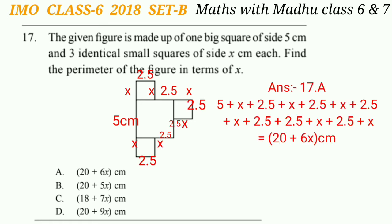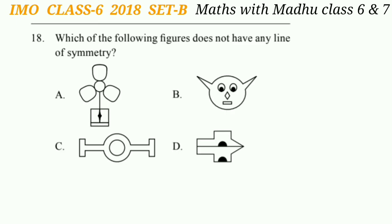The perimeter of the figure will be the sum of the sides: 5 + x + 2.5 + x + 2.5 + x + 2.5 + x, which equals 20 + 6x centimeters. So the answer will be option A.